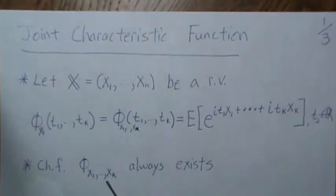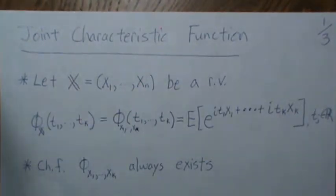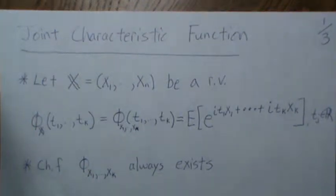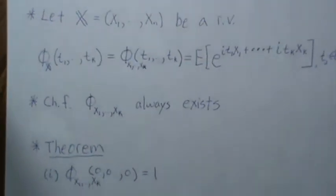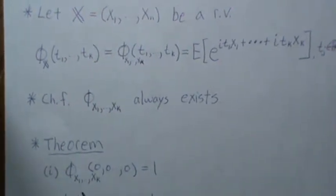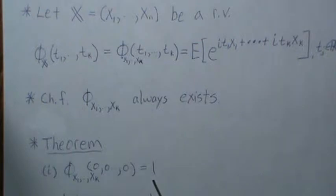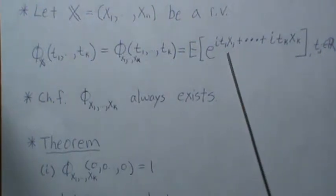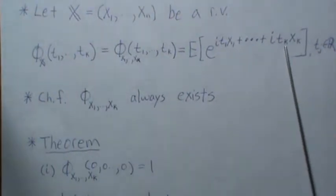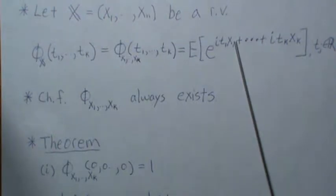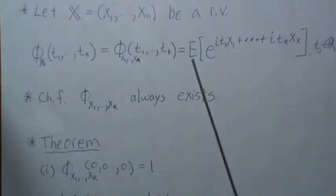The characteristic function always exists, and it's a very similar argument to the univariate characteristic function. So we'll look at some theorems here. If you plug in zero in all the T's, it's equal to one. You can see that here. If all these T's are zeros, you get an exponent, it's a zero. E to the zero is one. Expected value one is one.